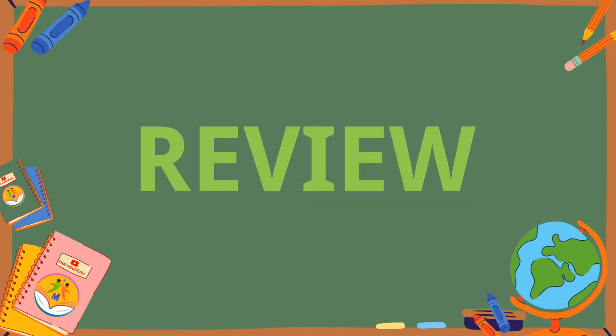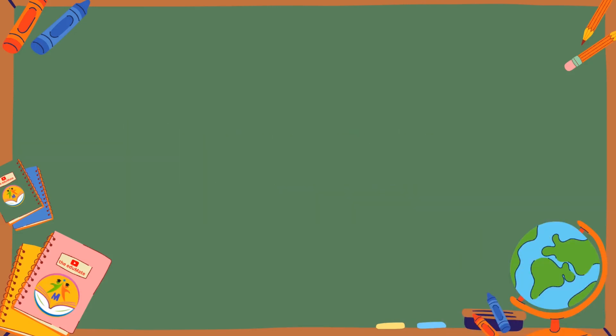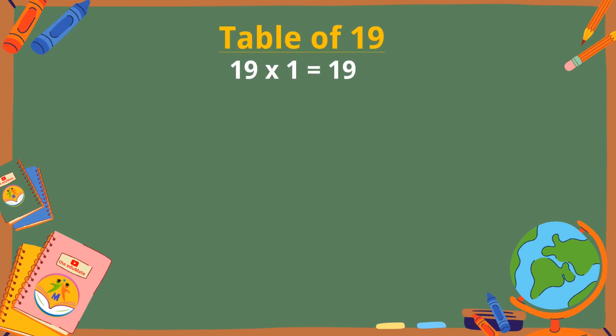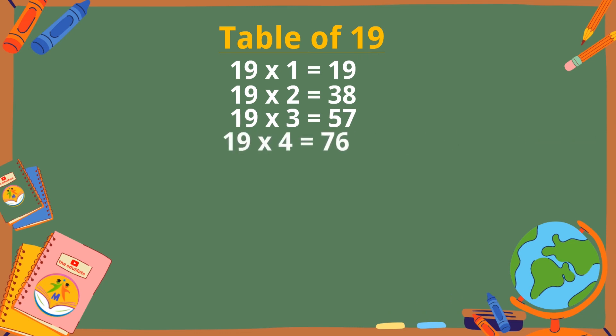Let's revise the table of 19. 19 ones are 19. 19 twos are 38. 19 threes are 57. 19 fours are 76.